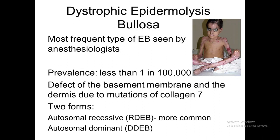The prevalence of junctional epidermolysis bullosa is less than 1 in 100,000. Dystrophic epidermolysis bullosa has a defect at the level of the basement membrane and dermis, and the mutation is in the gene responsible for the development of collagen 7. There are two forms: autosomal recessive, which is more common, and autosomal dominant.